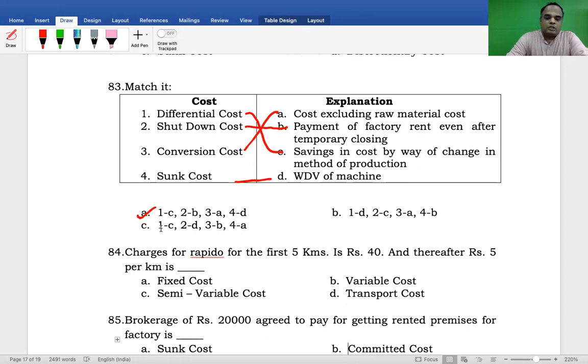Next: Charges for Rapido for first 5 kilometers is Rs. 40, and thereafter Rs. 5 per kilometer. This is partly fixed and partly variable. This is Semi-Variable Cost.